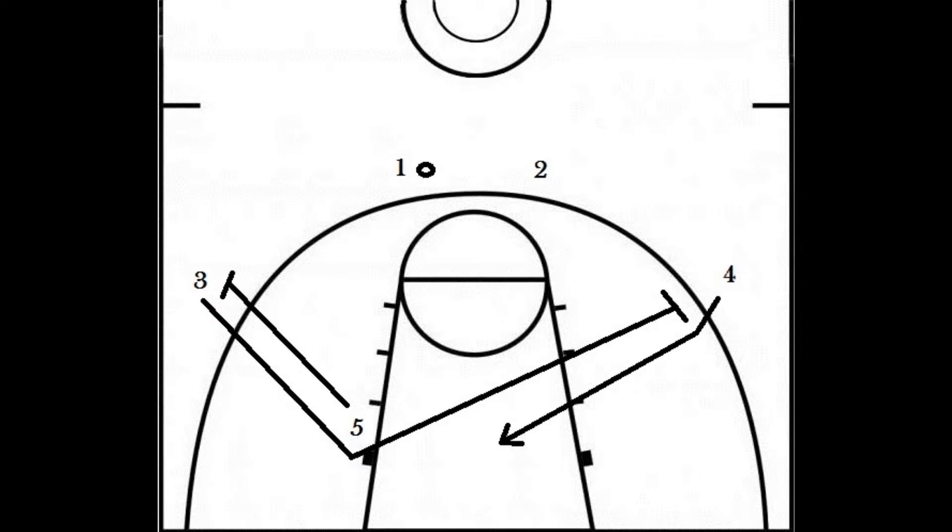If player 3 does not receive a pass, he will set a screen for player 4. And player 4 will cut to the basket looking for a pass.